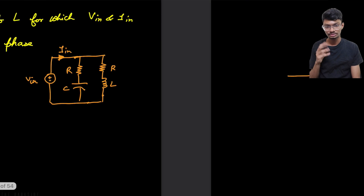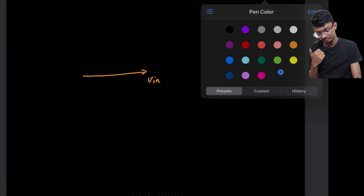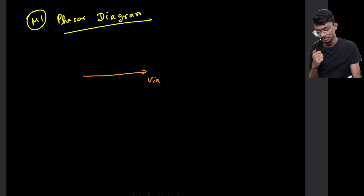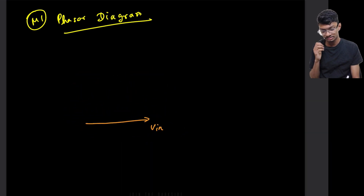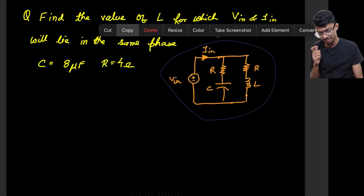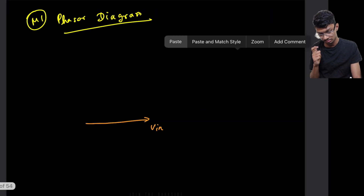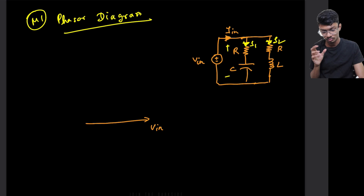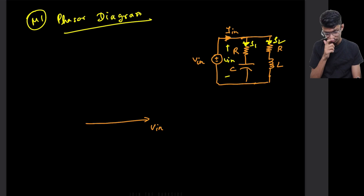We will solve this question using three methods. Method one is the phasor diagram method. In this method, we assume that Vin is the reference. The circuit has two currents: I1 and I2. The whole voltage across the parallel combination is Vin.